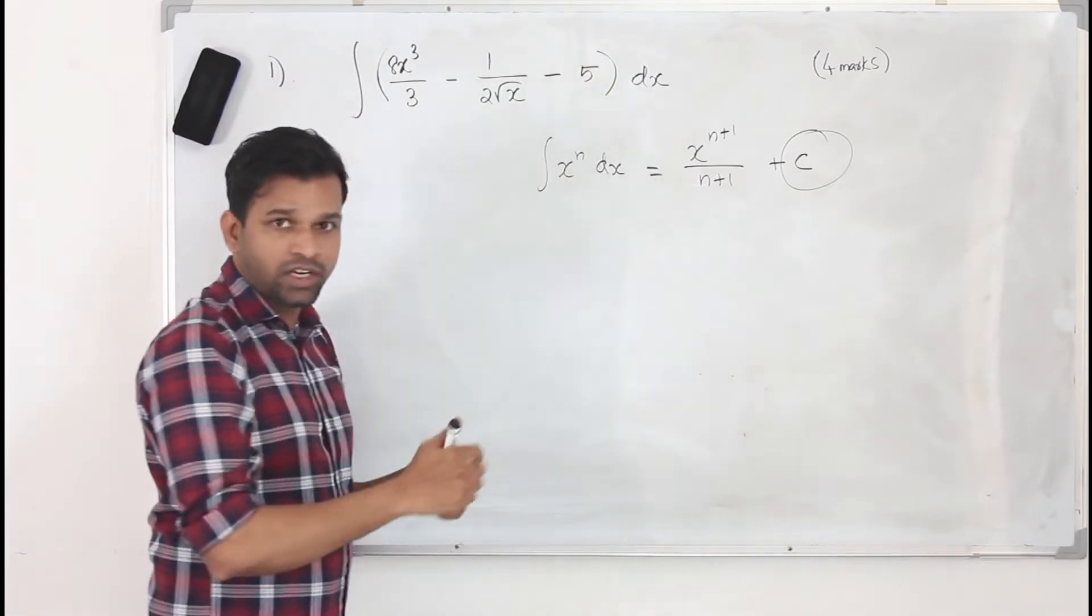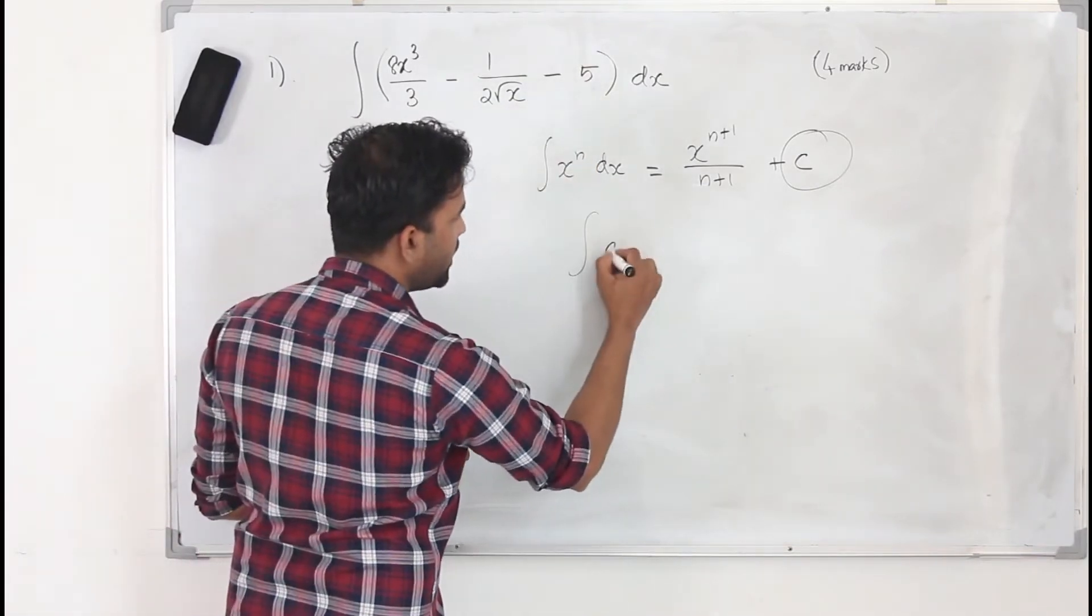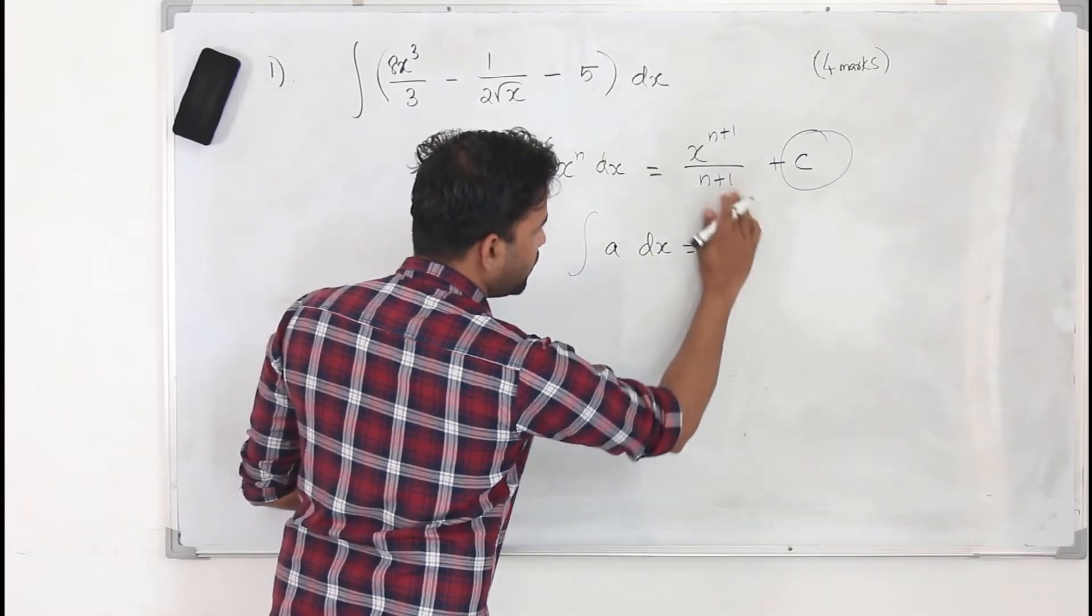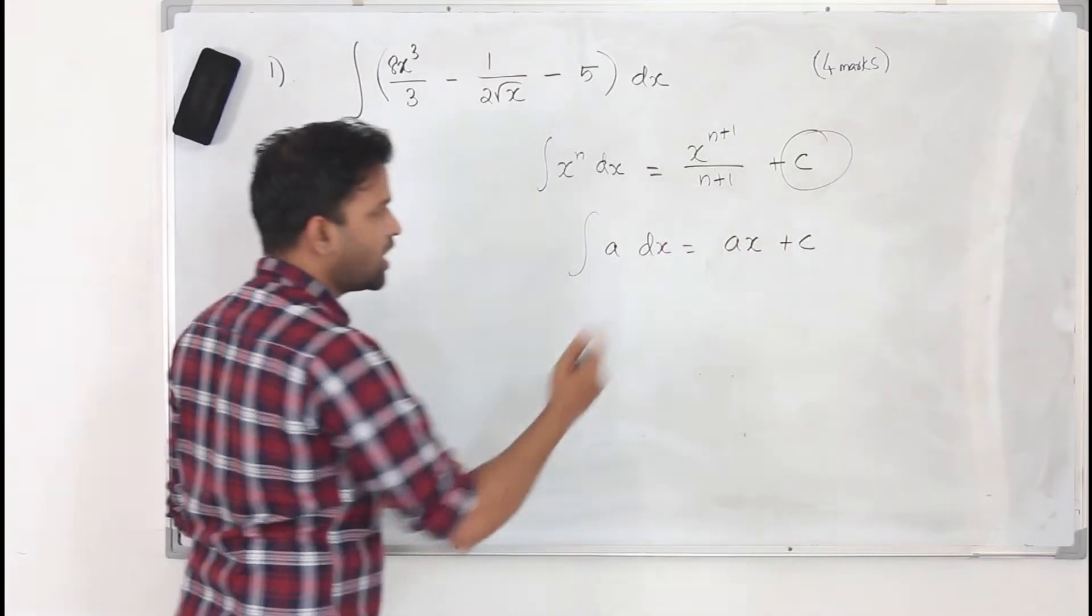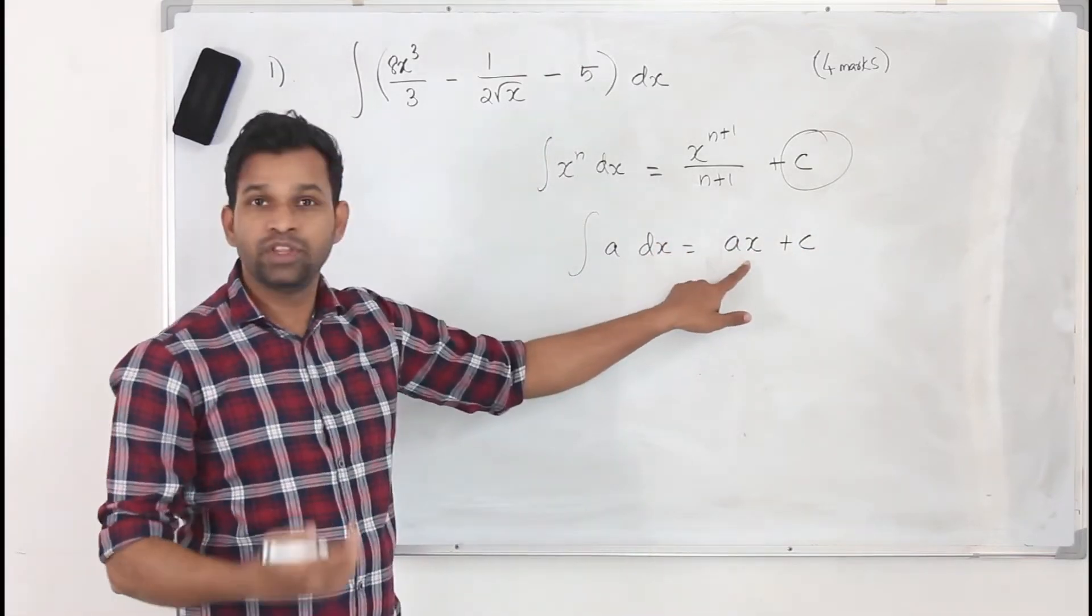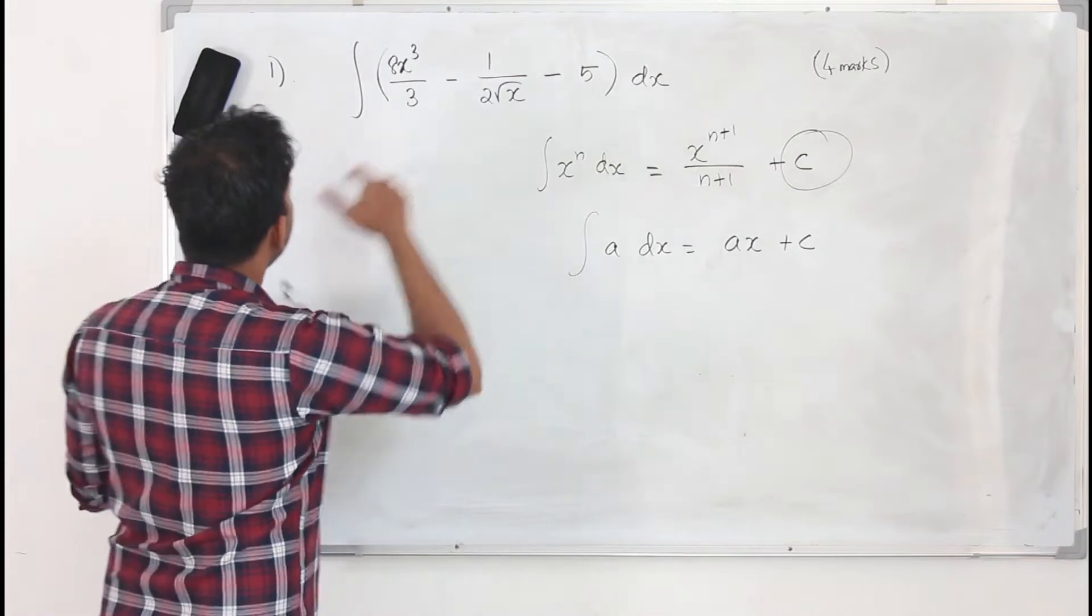But when you integrate a constant, it can be anything. 8 dx will become ax, ax plus c. You just put ax together with the constant. So we are going to integrate this.